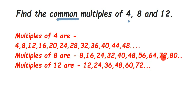Now circle the numbers present in all three lists. 4 is not present in all three, 8 is not, 12 is not. But 24 is present in multiples of 4, multiples of 8, and multiples of 12. The next is 48, which is also present in all three. Then 72 is present in multiples of 8 and multiples of 12.